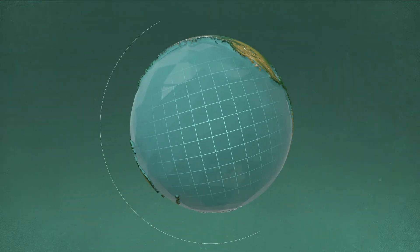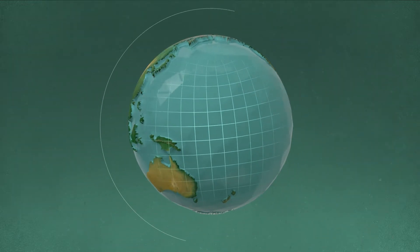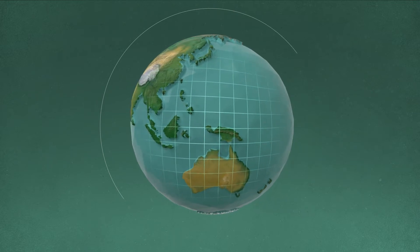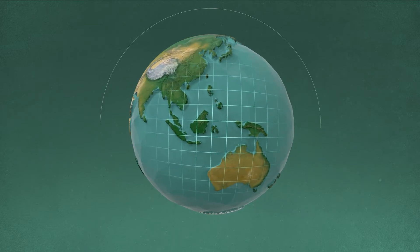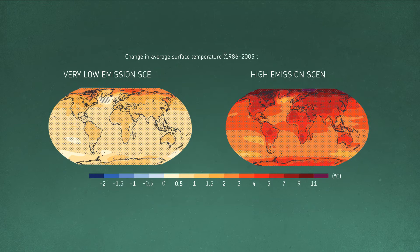Global climate models project a 0.3 to 4.8 degree rise in global average temperature by 2100. This is due to the atmosphere retaining more heat due to greater concentrations of greenhouse gases.